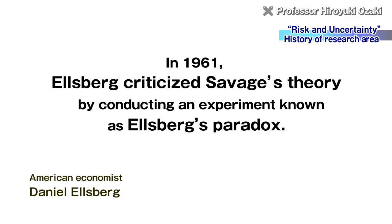But in 1961, Ellsberg criticized Savage's theory by conducting a well-known experiment known as Ellsberg's Paradox.